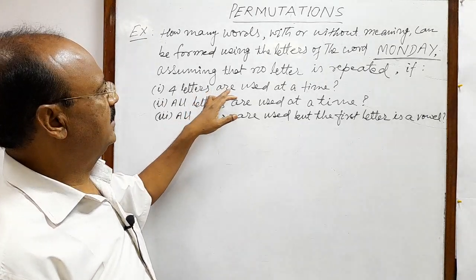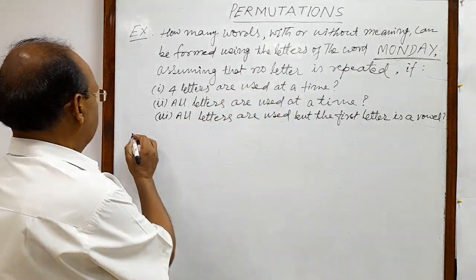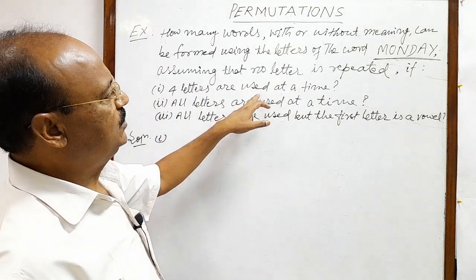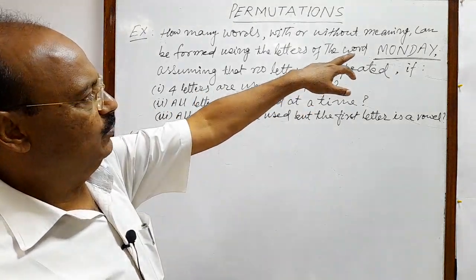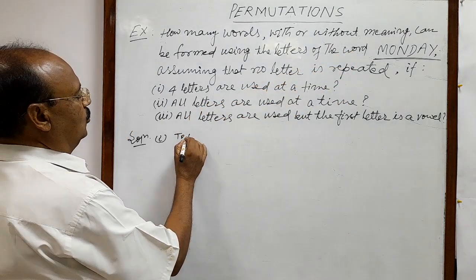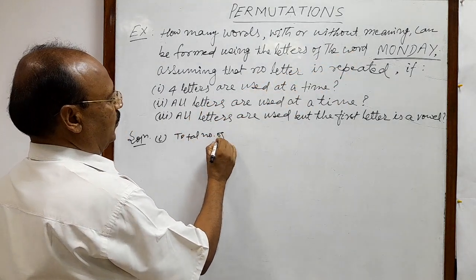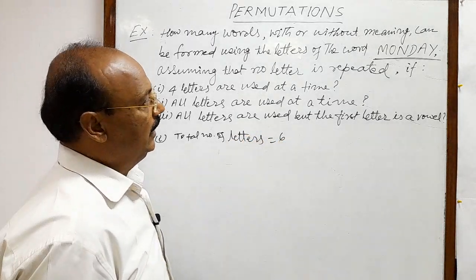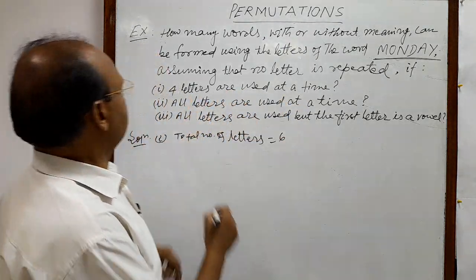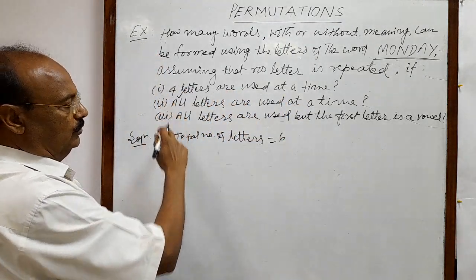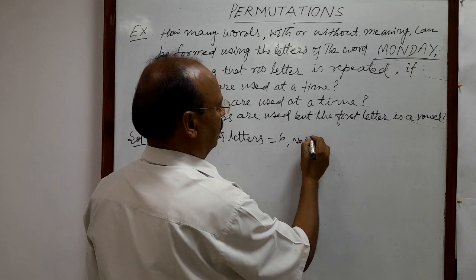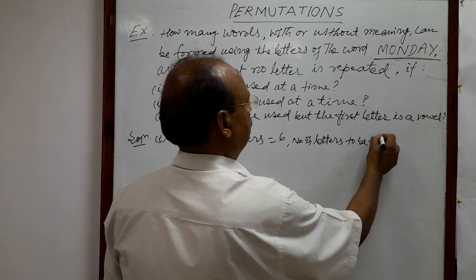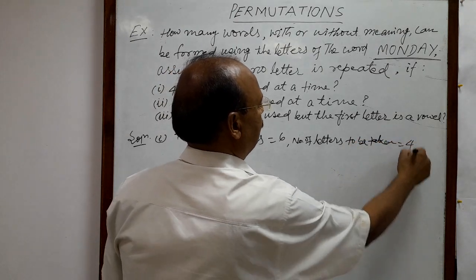The first part is: four letters are used at a time. The total number of letters in MONDAY is six, and the number of letters to be taken at a time is four.